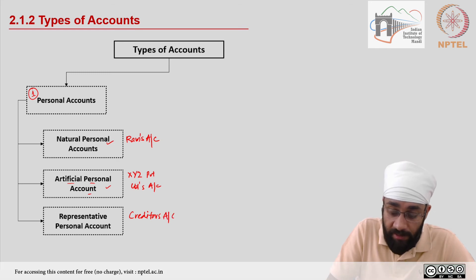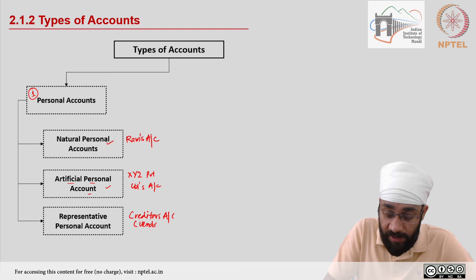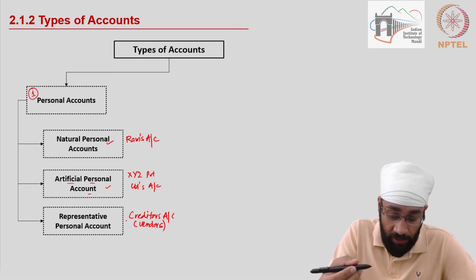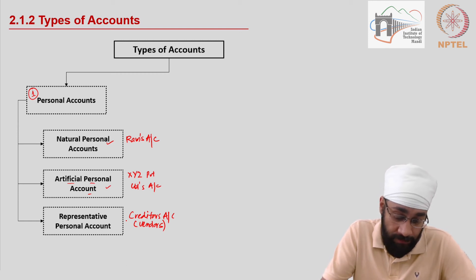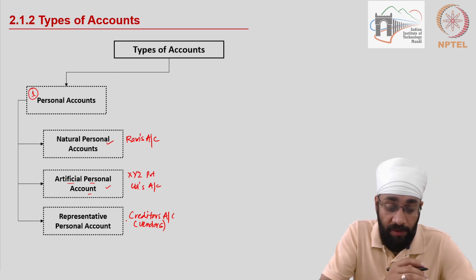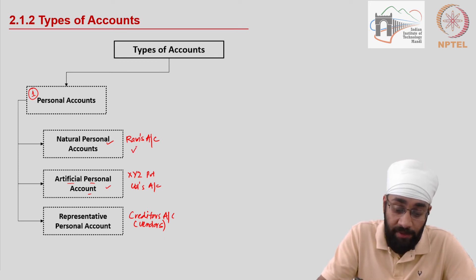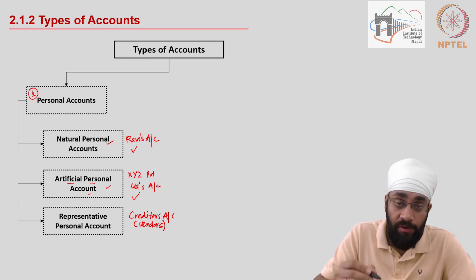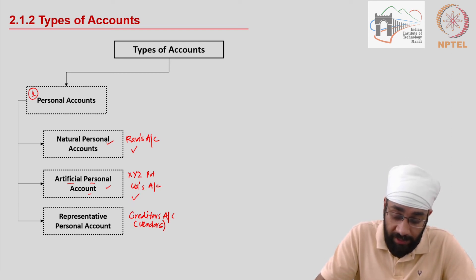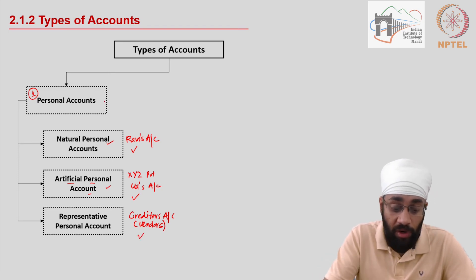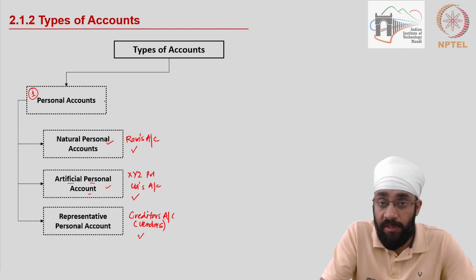The third sub-type is the representative personal account, where the record relates to either a natural person or an artificial person. An example of this is creditors — creditors represent natural or artificial persons. We call such accounts personal accounts.